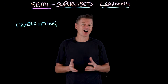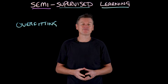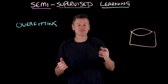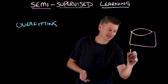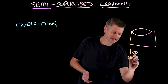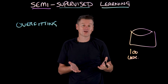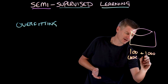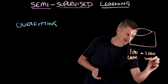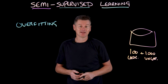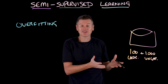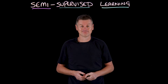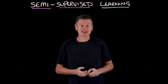By incorporating unlabeled data into the training process, we can effectively expand our dataset. So instead of just training on 100 labeled examples, we can also add in 1,000 unlabeled examples into the dataset as well. That gives the model more context to learn from without requiring additional labeled data. So that's the why — now let's get into the how.